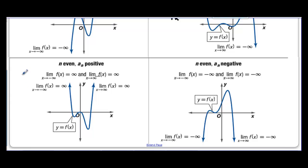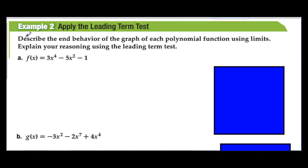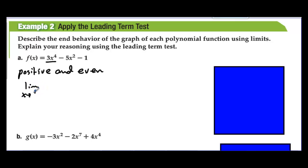For even powers: if we have 7x⁶, both sides go up. If we have −7x⁶, both sides go down on the ends. Example 2 — apply the leading term test. The leading term is 3x⁴, which is positive and even. So the limit as x approaches either plus or minus infinity of f(x) is positive infinity. Both ends of the graph go up.